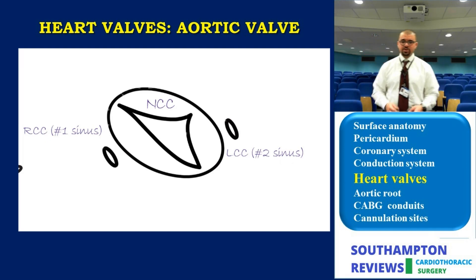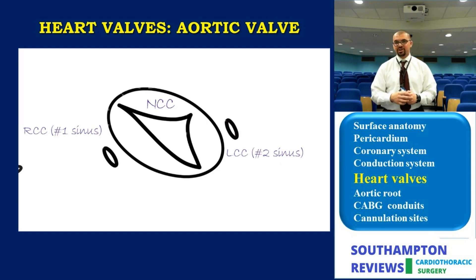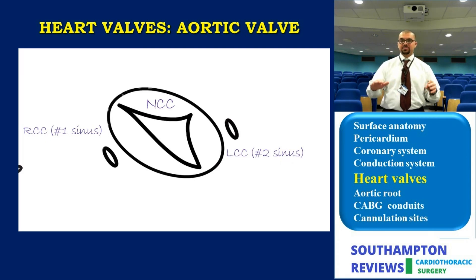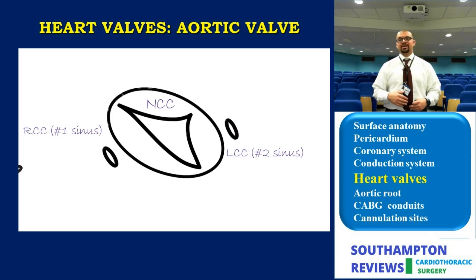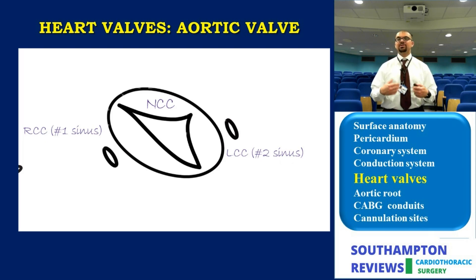The aortic valve consists of three cusps or leaflets, two of which are located in sinuses that give origin to the two main coronary arteries - the right coronary and the left coronary - giving us the right coronary sinus and the left coronary sinus, with corresponding right and left coronary cusps. Importantly, right and left do not denote direction: the right coronary sinus is actually anterior and the left coronary sinus is anterolateral. The names refer to the corresponding coronary artery.